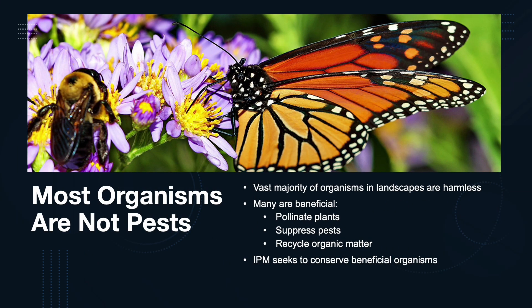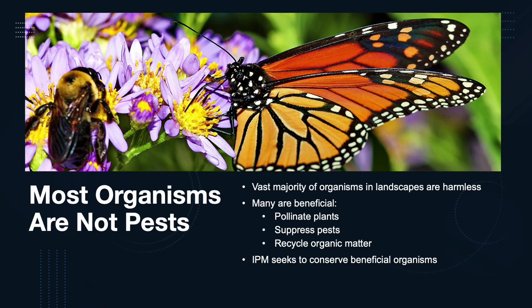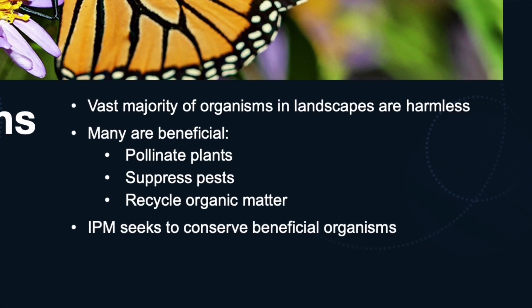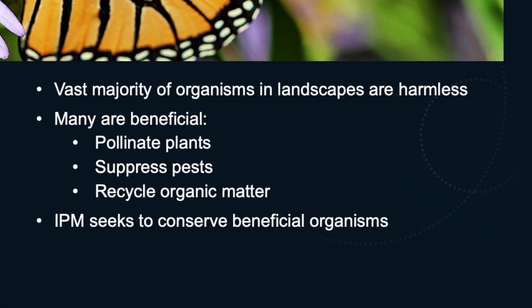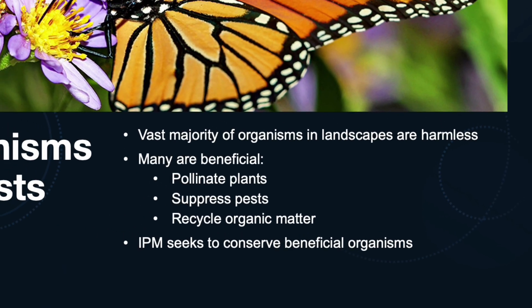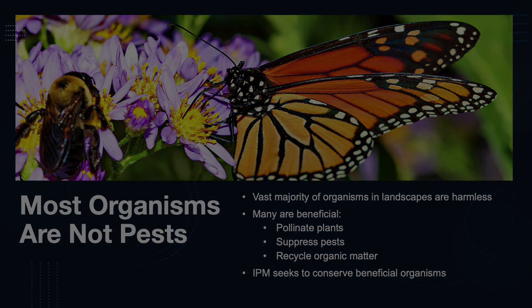It's important to remember that most organisms in the landscape aren't even pests. In fact, many are beneficial. Bees pollinate, ladybugs control aphids, and fungi and bacteria break down organic matter. One of the goals of IPM is to protect these helpful organisms while managing the ones that are truly harmful.